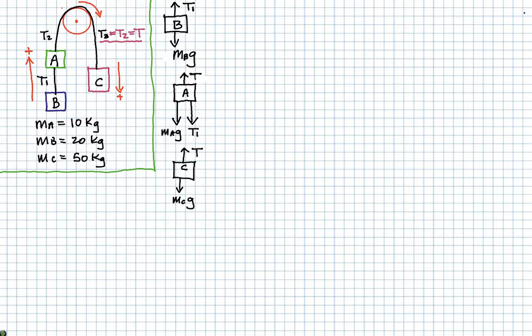The string holding object B is pulling upwards. We're going to call that T1. So just like in the overall diagram, this has positive moving in that direction. And that's going to be important when we do the Newton's second law statement.